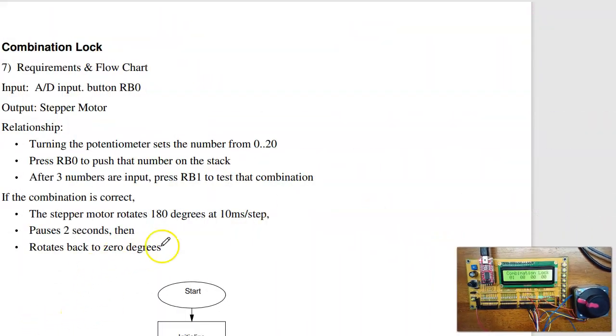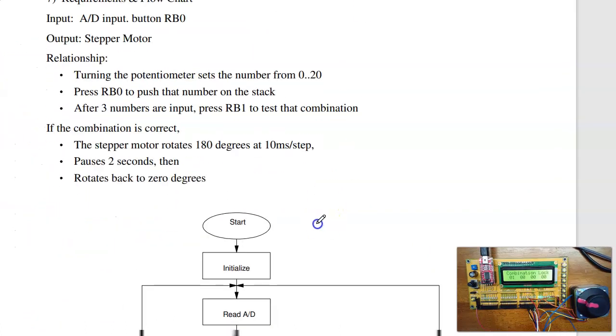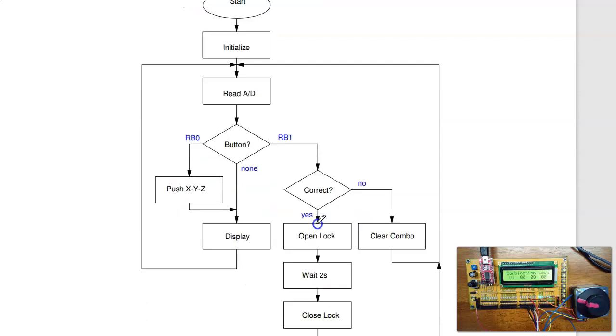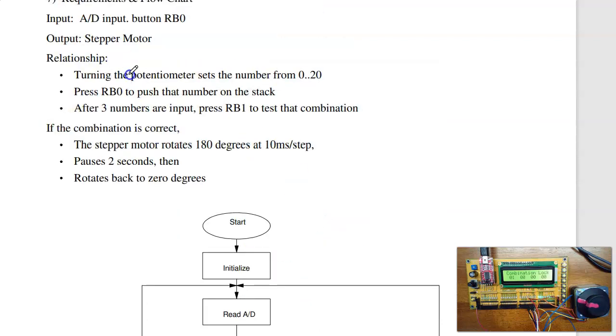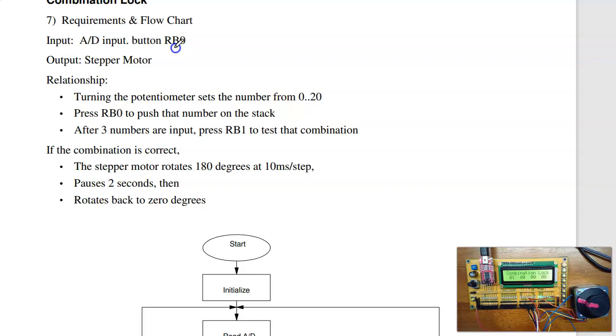How do I do it? Well, here's my requirements. I'm going to have the analog input, the push buttons, stepper motor. I turn the pot to set the number. Press RB0 to lock that number. RB1 to test the combination. If correct, rotates 180 degrees at 10 milliseconds a step, pauses 2 seconds, then goes back.